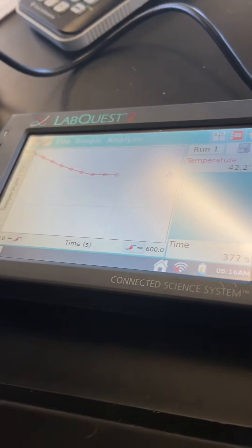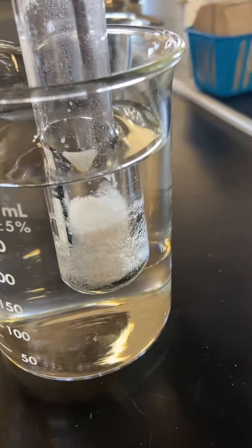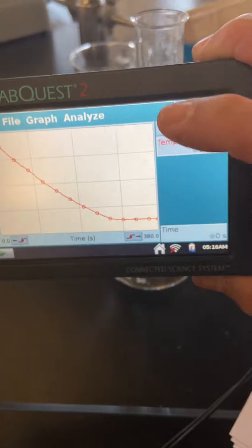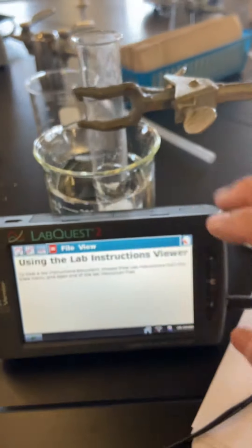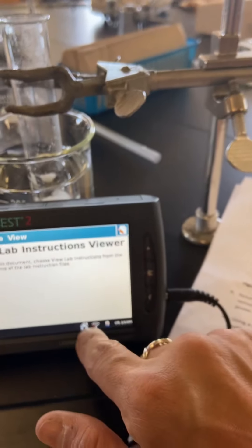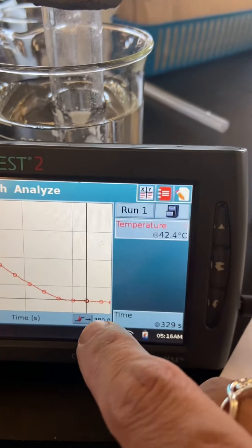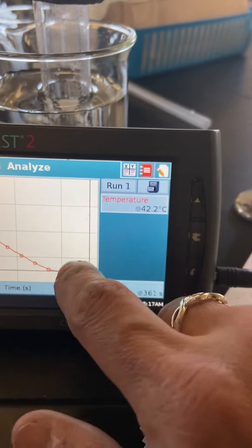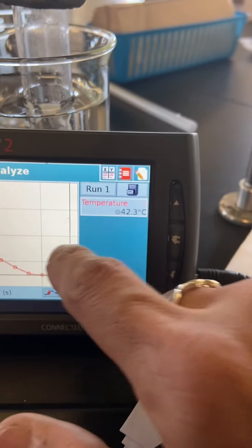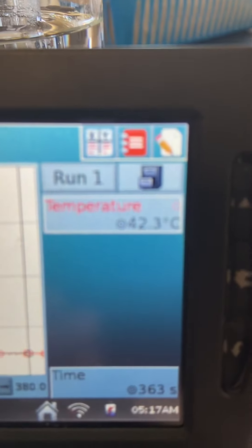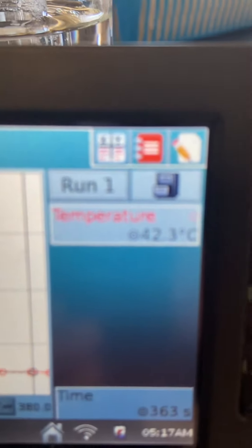So when you're ready to stop, just hit the stop button on the LabQuest. And here we have freezing point. What we can do is find that plateau and record the temperature, the freezing point of lauric acid, which is 42.3 degrees Celsius.